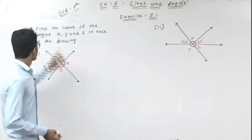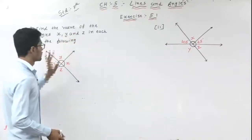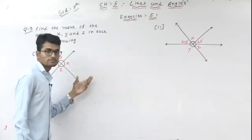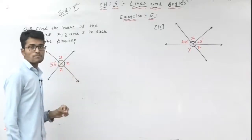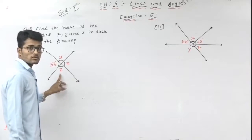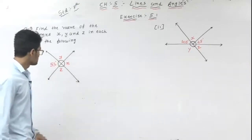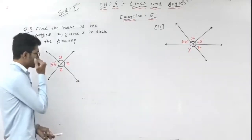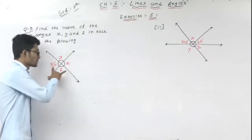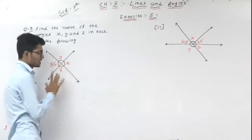So the first figure. Find the value of angles X, Y and Z in each of the following. Here two figures are given with some angles. We need to find X, Y and Z. So dear students, see here: this angle is 55, this angle is X, this angle is Y, and this angle is Z.